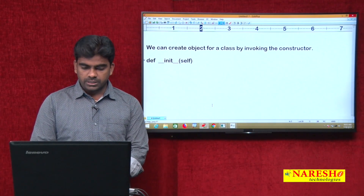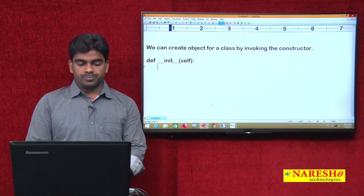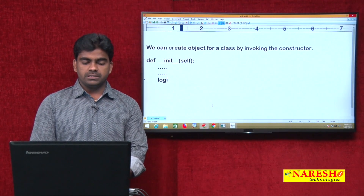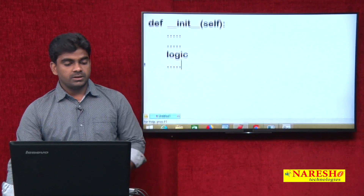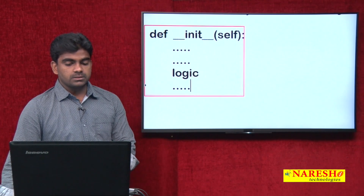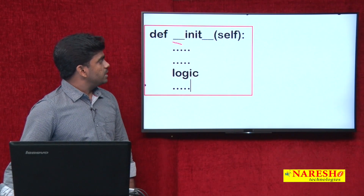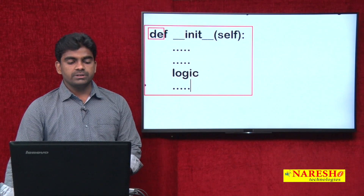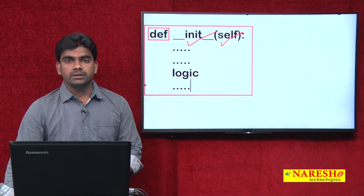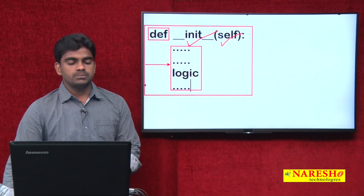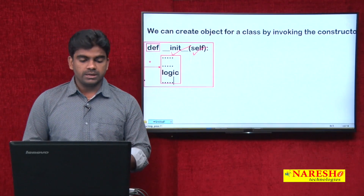The most recommended variable to define object-level members in Python, according to the Python organization, is called 'self'. Inside the constructor you can write the logic — any number of statements you can define. This is what a constructor is in Python and this is how we have to define it. It is also a method, that is why we use the 'def' keyword, and indentation and tab space all these things we need to consider.